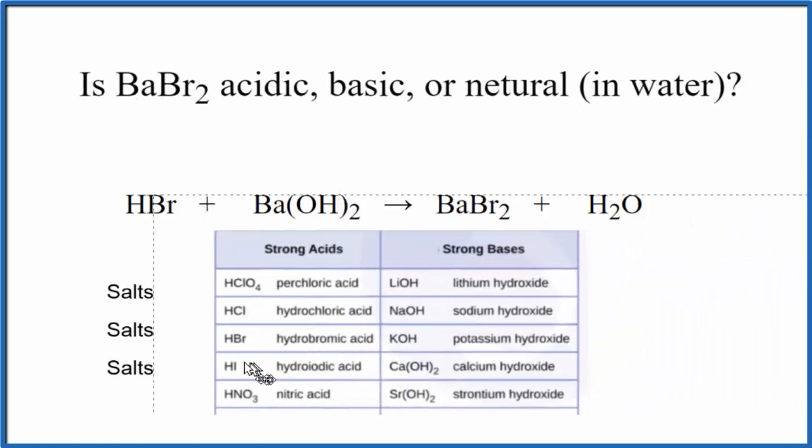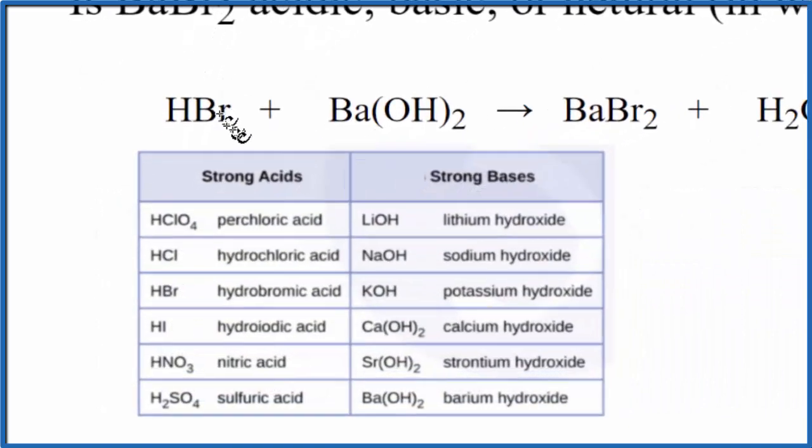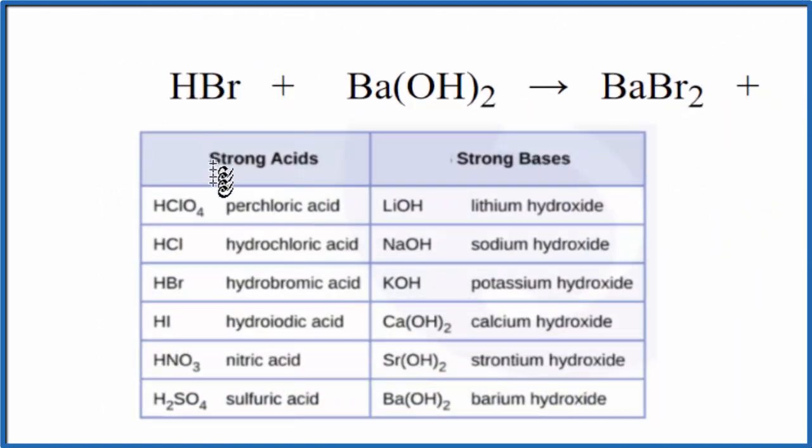This chart is really useful to do that. So we're looking for HBr. As we go down here, here's HBr, hydrobromic acid. That's a strong acid. Then barium hydroxide, Ba(OH)2, barium hydroxide right here, strong base.